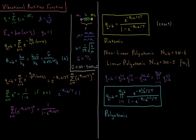Our vibrational partition function is going to be a sum from n equals 0 to infinity of e to the minus h nu over kT times n plus 1 half, putting in our Boltzmann factor. We can also define a new quantity called the vibrational temperature, just as we did for the rotational temperature in the previous video. Theta vib equals h nu over k, also equals h c nu bar over kB.